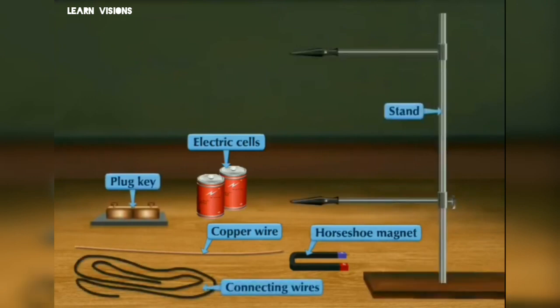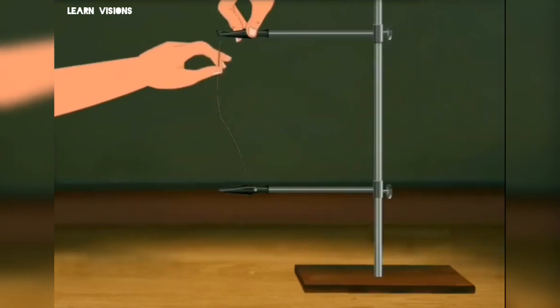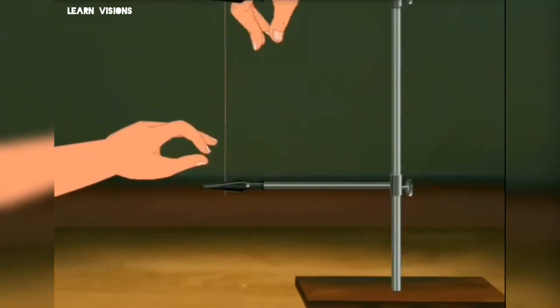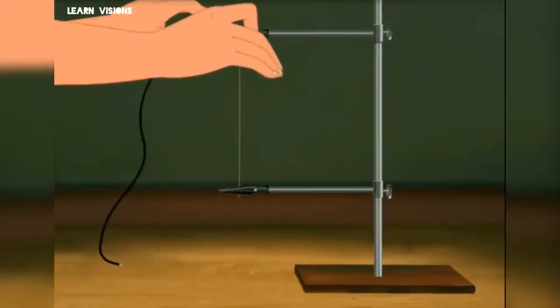And now let's connect the circuit. First fit the copper wire at the two ends of stand, then connect it with the wire, and connect the battery with the wire and plug key.